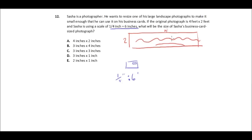Well, we know that the original photograph is 4 feet. And so we have to think, well, how many 6 inch increments are there? Well, we know that there are, 1 foot equals 12 inches.